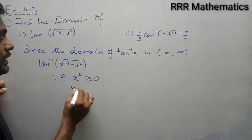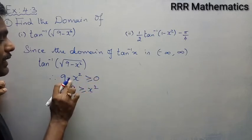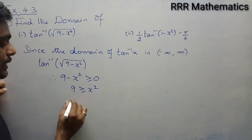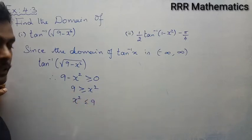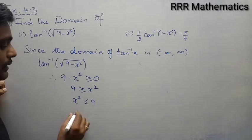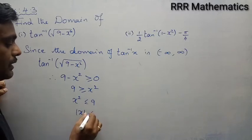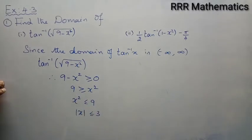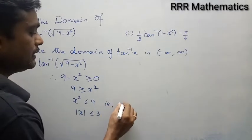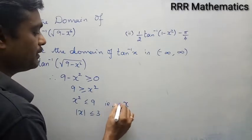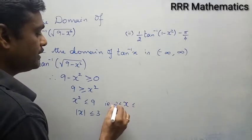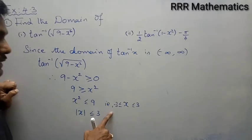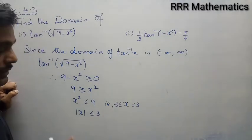So 9 is greater than or equal to x squared, meaning x squared is less than or equal to 9. That is, mod x is less than or equal to 3. Therefore, x lies between minus 3 and plus 3.